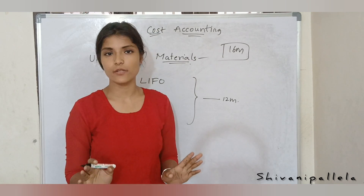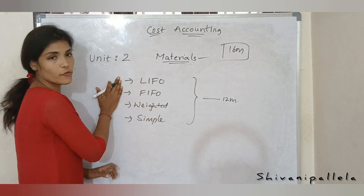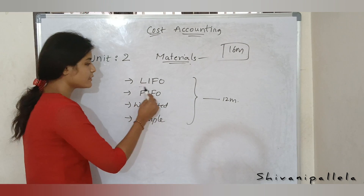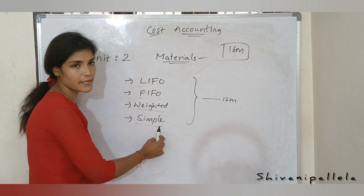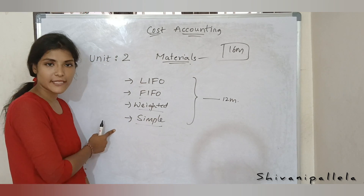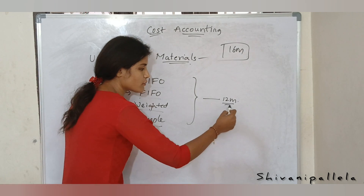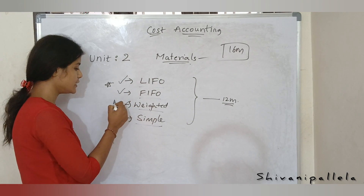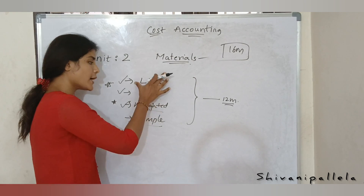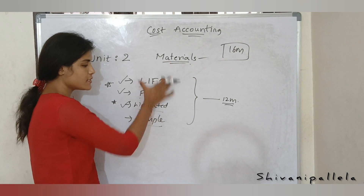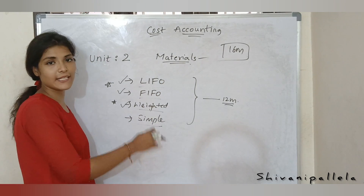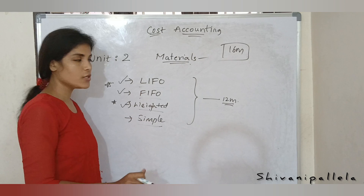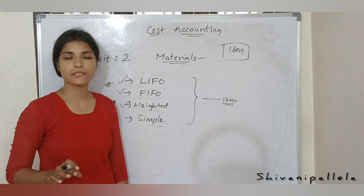You are not required to memorize any formulas in this unit. For 12 marks there will be a problematic question consisting of the LIFO method, FIFO method, weighted method, and simple method. These 4 problematic methods will come for 12 marks. LIFO and FIFO are very important; weighted is a little bit important. All 4 are easy to understand — within 2 hours you can finish the materials chapter perfectly.